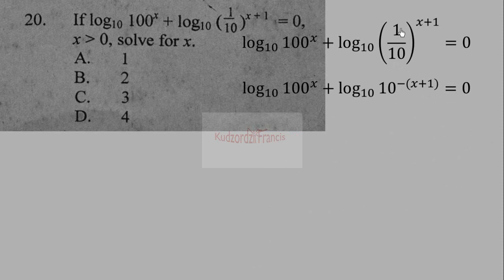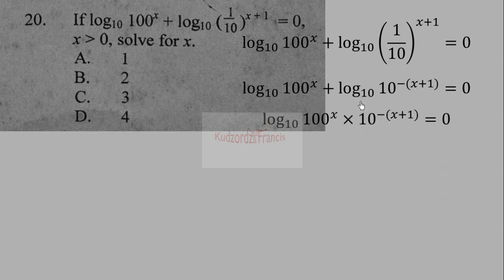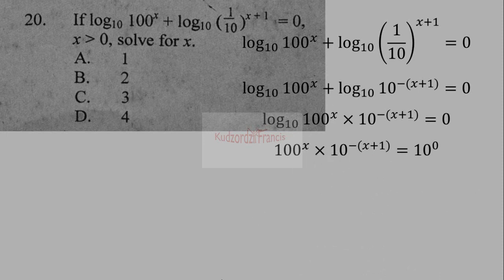We rewrite 1/10 as 10⁻¹, so the exponent (x+1) becomes negative and multiplies through. Then, using the product rule of logarithms — since both logs have the same base and are added, we multiply the arguments — giving us a single logarithm expression.